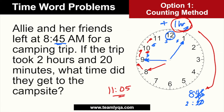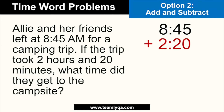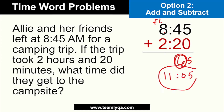Now, where does the addition method help? If I just add directly: 8:45 plus 2 hours and 20 minutes. For the minutes: 45 plus 20 equals 65. Since 65 is past 60, I carry over 1 hour and keep 5 minutes. For the hours: 8 plus 2 is 10, plus 1 carried over equals 11. So the answer is still 11:05. With addition, I go straight to the solution without needing to picture or draw a clock.